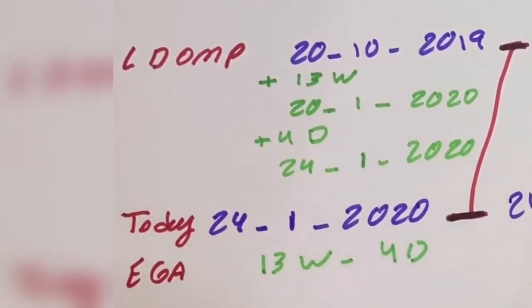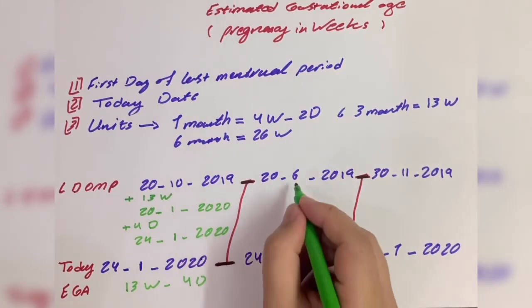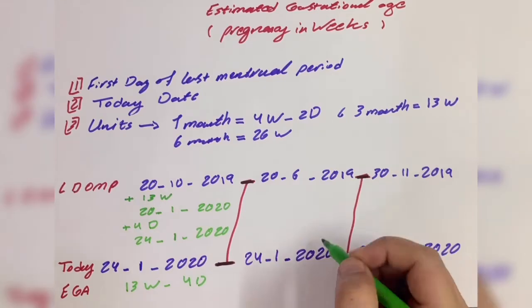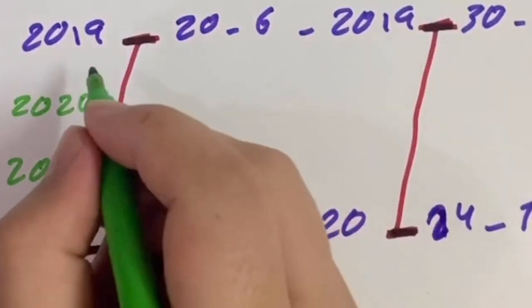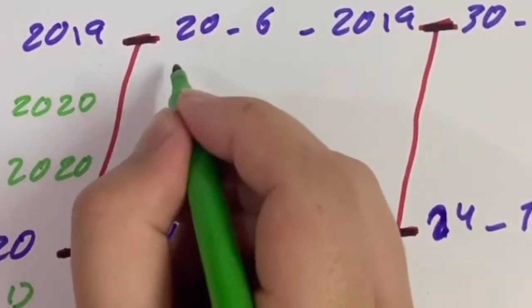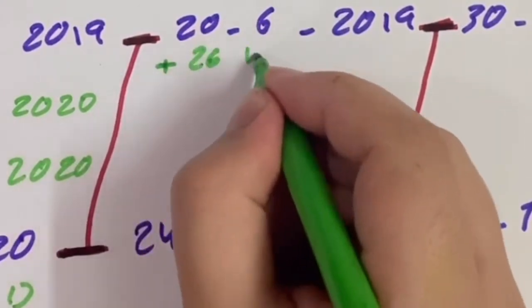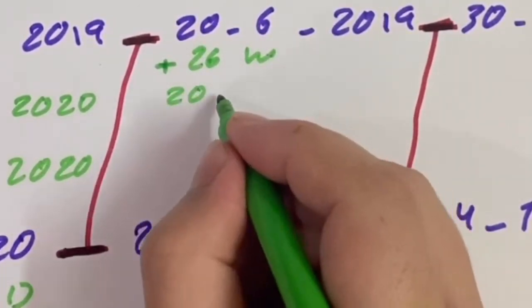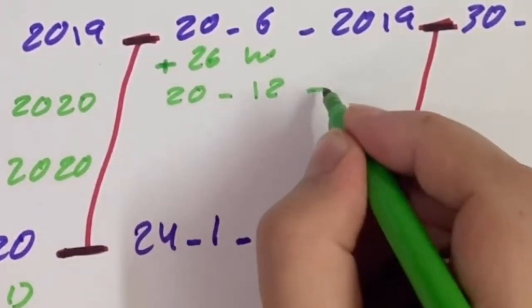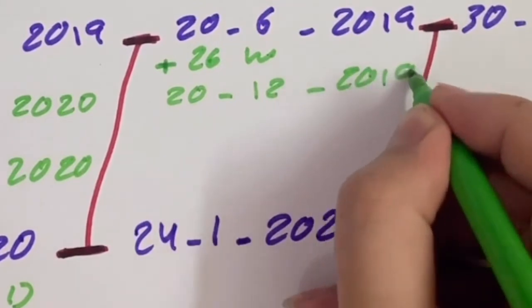The first day of the last menstrual period is day 20, month 6, year 2019. We will add 26 weeks, so the date will be day 20, month 12, year 2019.